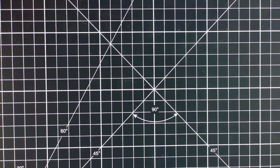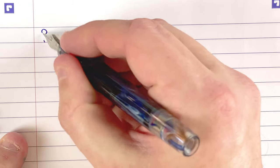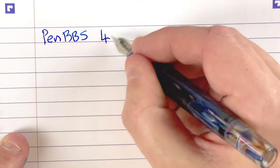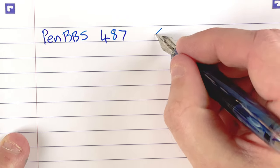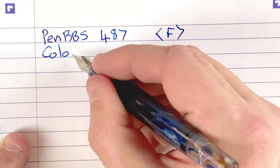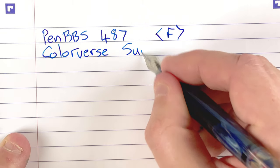Time now for the all-important writing samples. Let's fetch in my notepad. So this notepad is by Oxford and it uses their optic white paper. So it's a really nice fountain pen friendly paper. So the first pen we've got. This is a PenBBS 487 with a fine nib. The ink is by Colourverse and it's called Supernova.